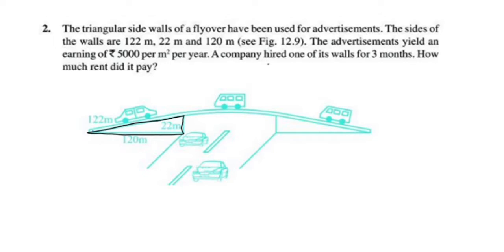A company hired one of its walls for three months — how much did it pay? The rate is 5,000 per m² per year. Since the company hired for 3 months, not a full year, we need to calculate the area of the triangle first, then work out the cost for 3 months.